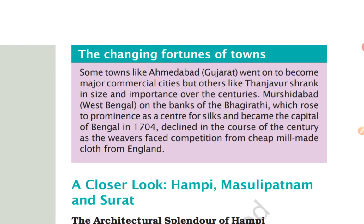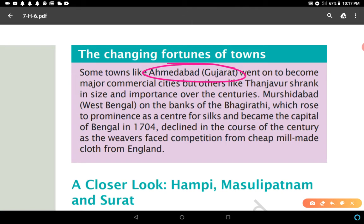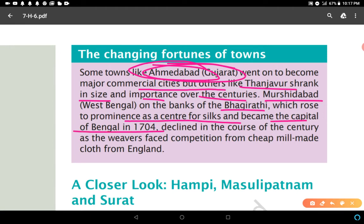The last topic in this video is the changing fortunes of towns. Some towns like Ahmedabad — now in Gujarat — went on to become major commercial cities, but others like Thanjavur shrank in size and importance over the centuries. Murshidabad in West Bengal, on the banks of the Bhagirathi, rose to prominence as a center for silks and became the capital of Bengal in 1704.